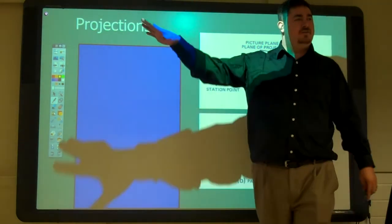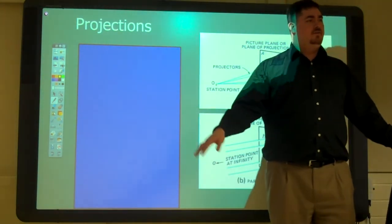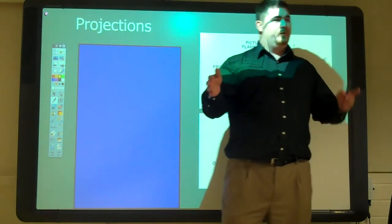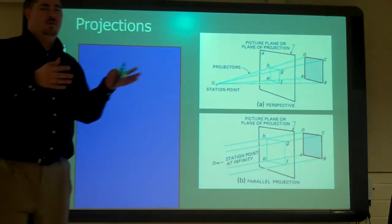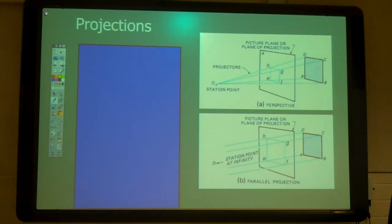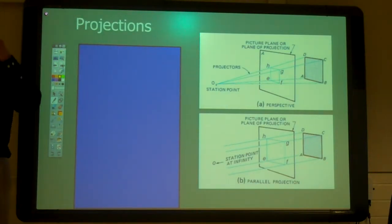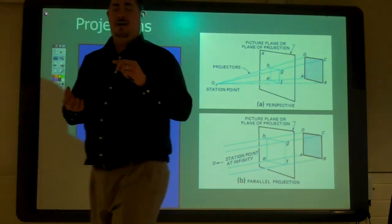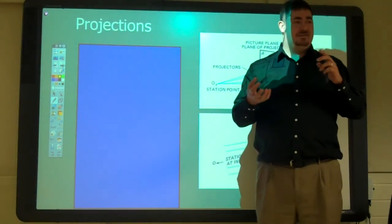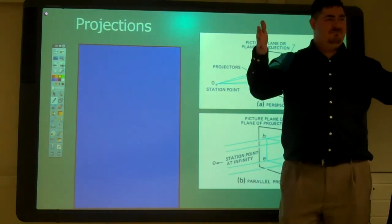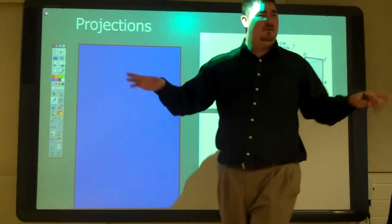Civil drafting covers the ground and everything underneath — roads, pipes, mining. Architectural is buildings. Mechanical is everything that goes on the ground, in the ground, into a building, or inside a building — the pipe itself, street lights, doors, windows, steel framing, AC units, desks, cars. Buildings themselves are architectural; the ground is civil; but everything else is mechanical.